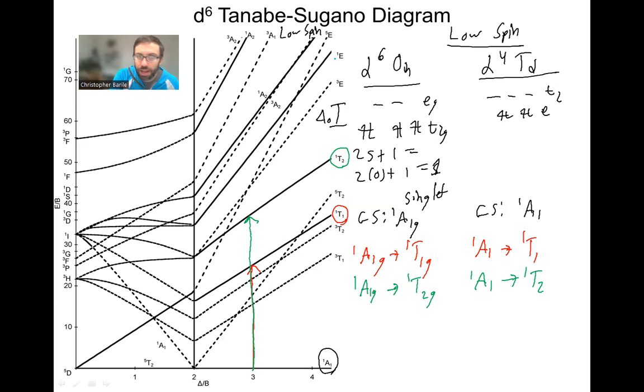It looks like we have one more here, but there's another one up there we're going to have to do. This one's going to be singlet A1G going to singlet EG, not an A1G, and singlet A1 going to singlet E. That's going to be our third excited state.